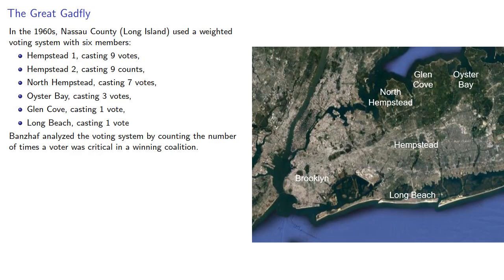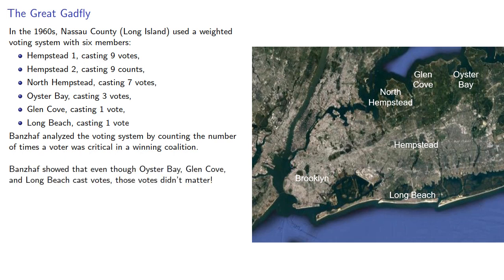And a similar thing happened in Long Island. Banzhaf showed that Oyster Bay, Glen Cove, and Long Beach, even though they cast votes, those votes didn't matter. And as a result, the weighted voting system was restructured.